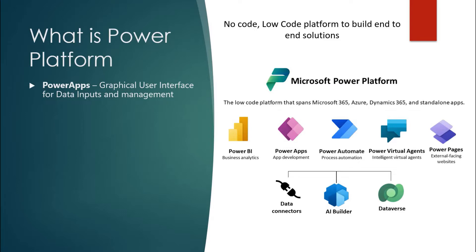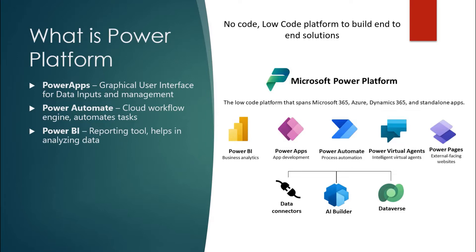Looking at each application one by one: Power Apps is mainly a graphical user interface tool — you can create apps to get, read, write, and manage data. Power Automate is a cloud workflow engine that lets you automate your tasks. Power BI is a reporting tool that has been around for over 10 years — you can analyze your data using Power BI.